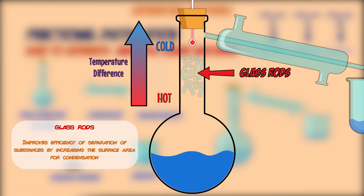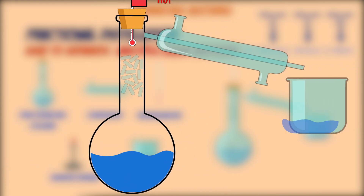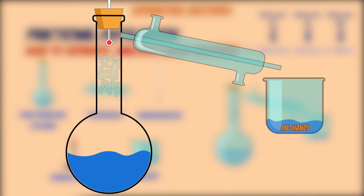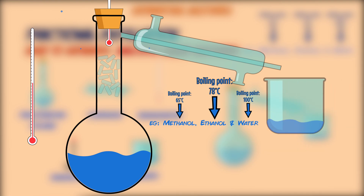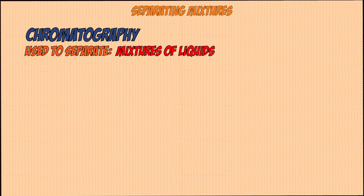The glass rods are there to improve the efficiency of condensing the ethanol and water back down, so they're not separated out. Once all the methanol has been separated, you raise the temperature to 78°C and repeat the process for ethanol. You can keep repeating this process if you have more than three liquids in the mixture.